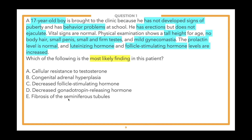We recommend starting at the bottom of the answer choices and working up to prevent selecting the first appealing option without reviewing all choices. Answer choices are: E) fibrosis of the seminiferous tubules, D) decreased gonadotropin-releasing hormone, C) decreased follicle-stimulating hormone, B) congenital adrenal hyperplasia, A) cellular resistance to testosterone. The poll is now open.